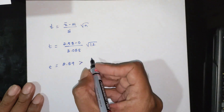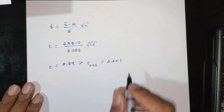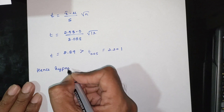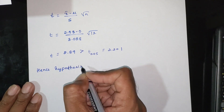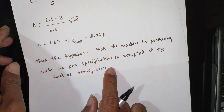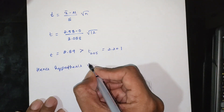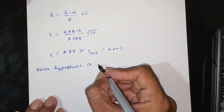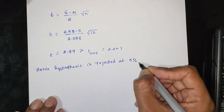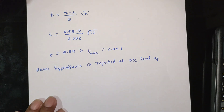T equals 2.89, which is greater than T₀.₀₅, that is 2.201. Hence the null hypothesis is rejected at the 5% level of significance.